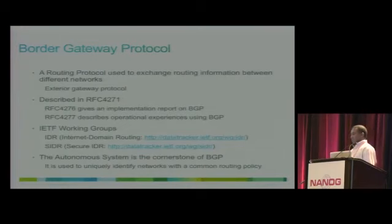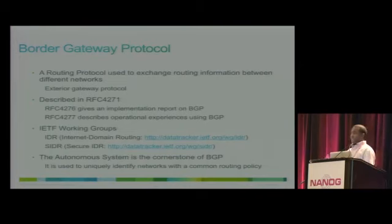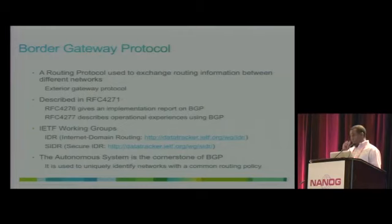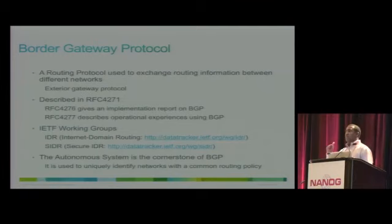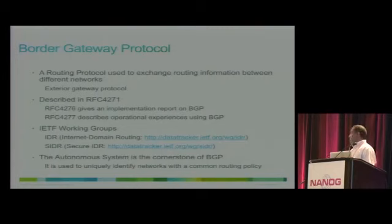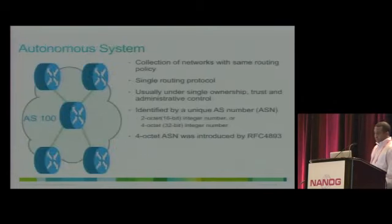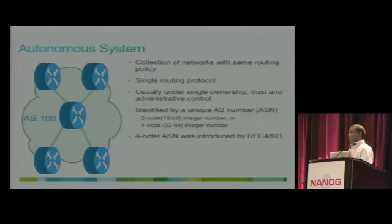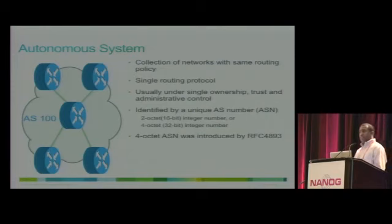The Autonomous System is the cornerstone of VGT. An autonomous system describes a single network administered by a single entity. It is a number used to uniquely identify that specific network. In general, it is administered by a single entity, though it's possible that a single entity may have multiple autonomous system numbers due to mergers and acquisitions. An autonomous system is a collection of routers and networks that run the same internal routing protocol and share the same routing policy.